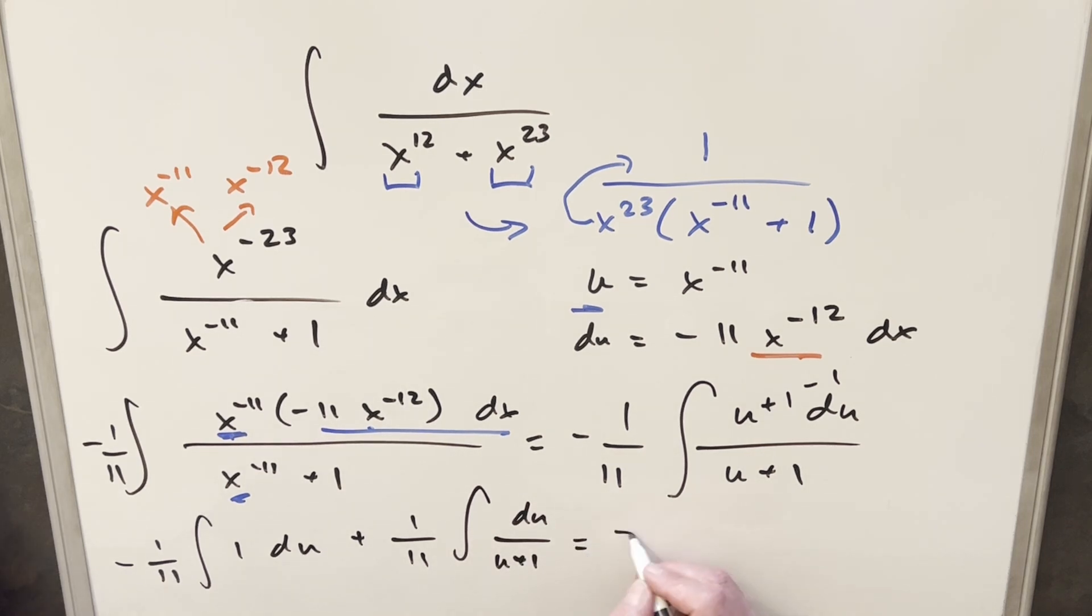Then we'll go ahead and integrate. We're going to have minus 1 over 11. Integrating 1 is just going to be u, so we'll have u here. Plus 1 over 11, this is going to become natural log u plus 1.